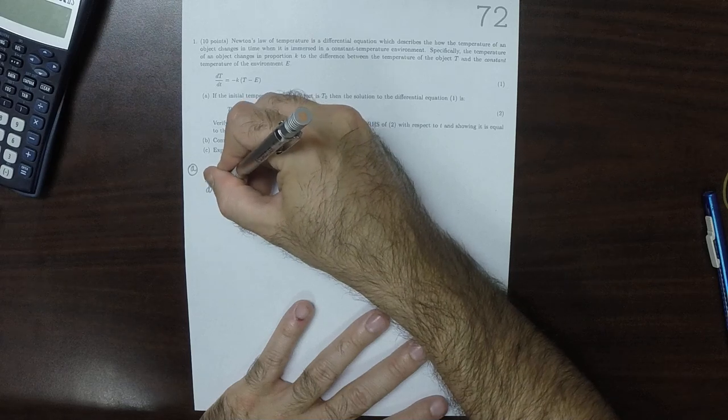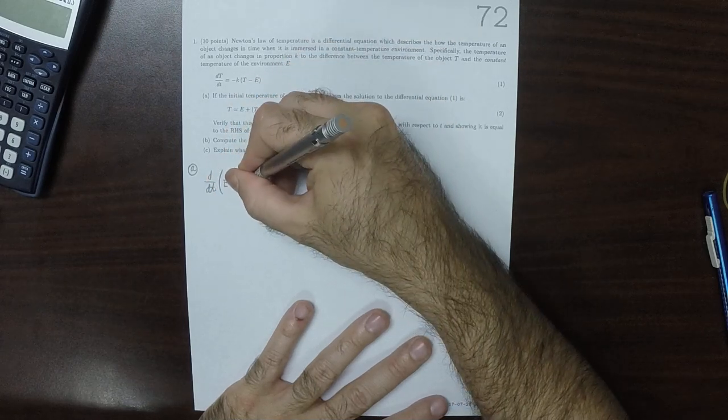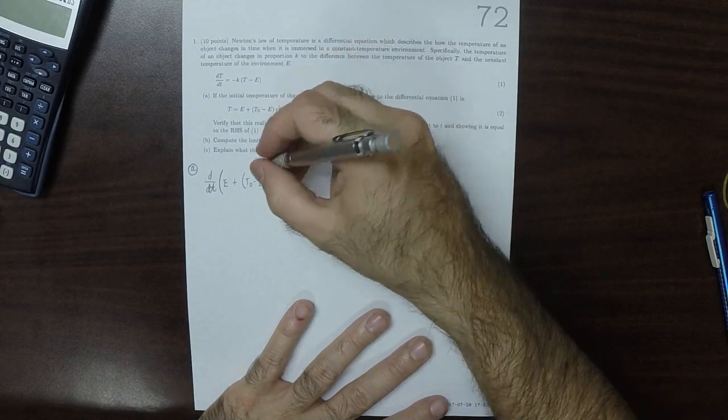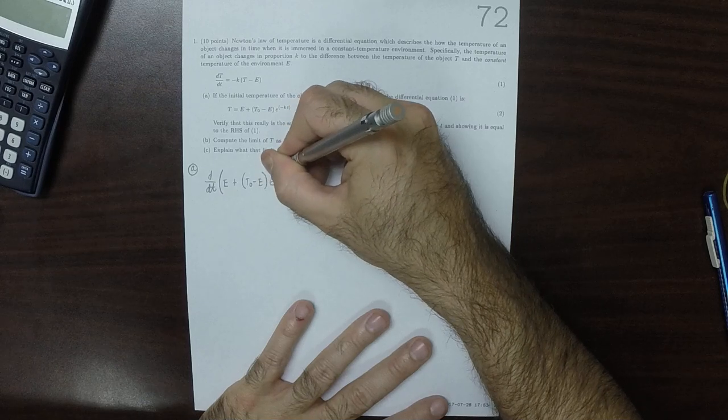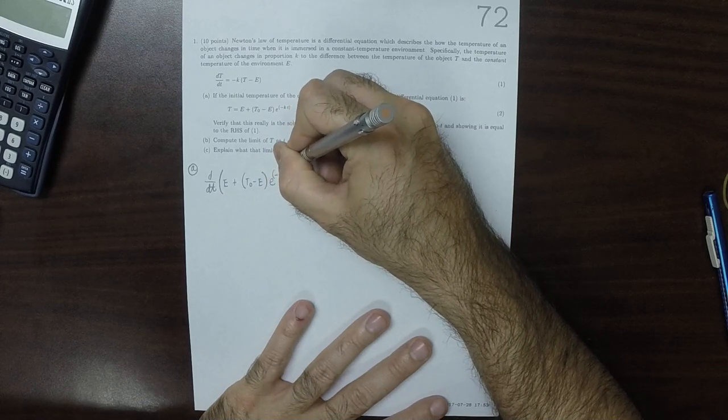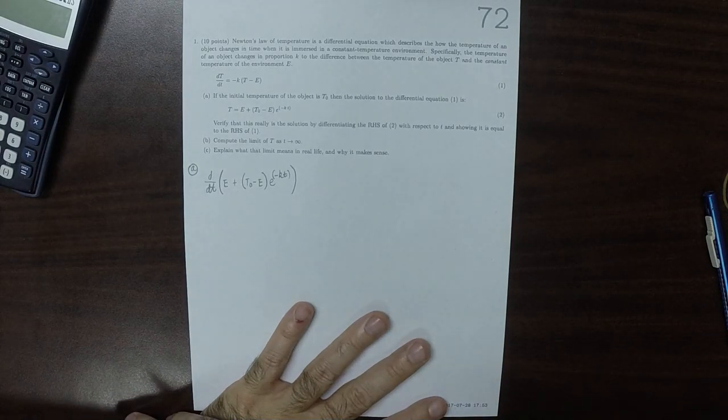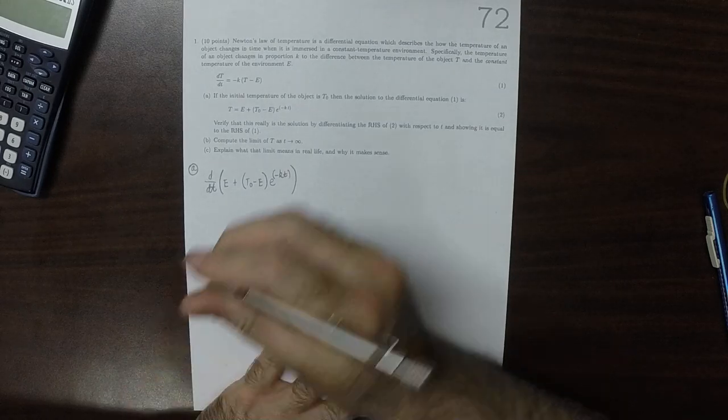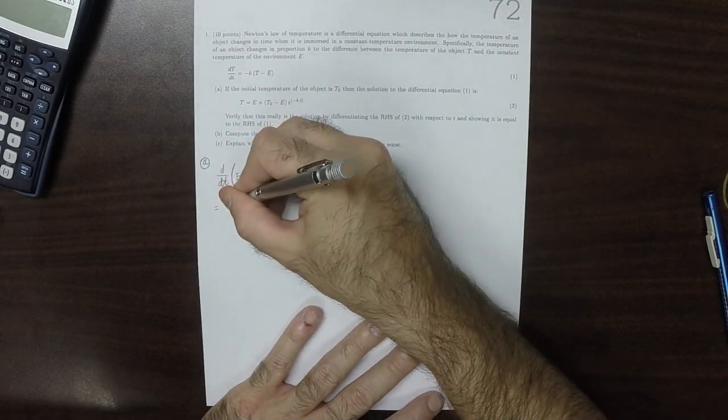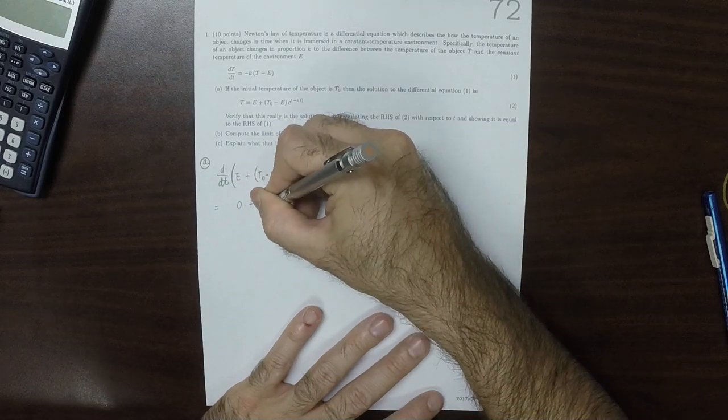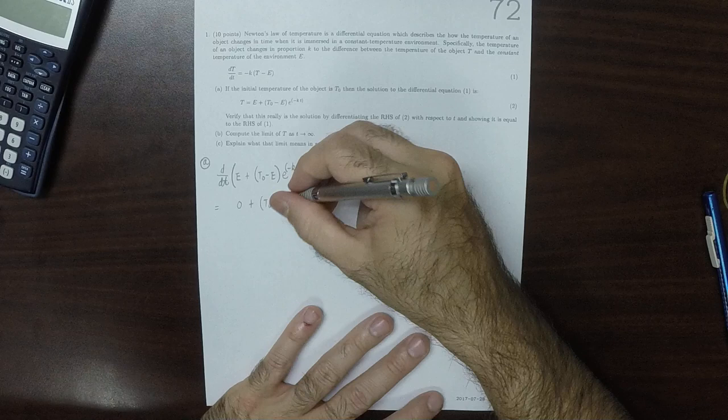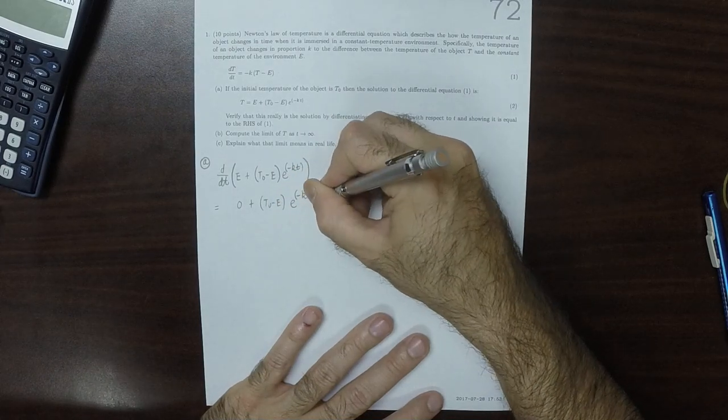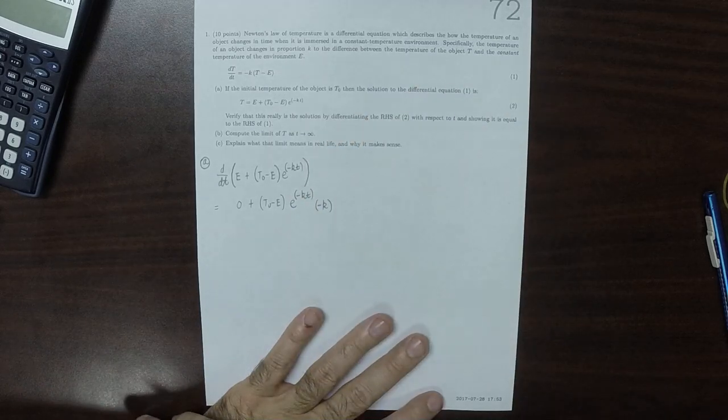Differentiate e plus t0 minus e exponential of negative kt. Now, what was constant? E is a constant, t0 is a constant. So differentiating this, we would get 0 plus t0 minus e - that's a constant. The derivative of exponential is itself. And then we also get a negative k because that's the derivative of kt.